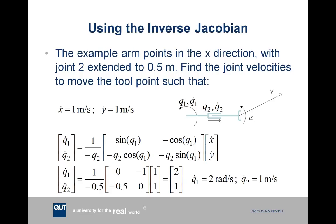So with all these numbers plugged in, it's some fairly simple math and we get that q1 dot, the revolute joint, is 2 radians per second and q2 dot is 1 metre per second.